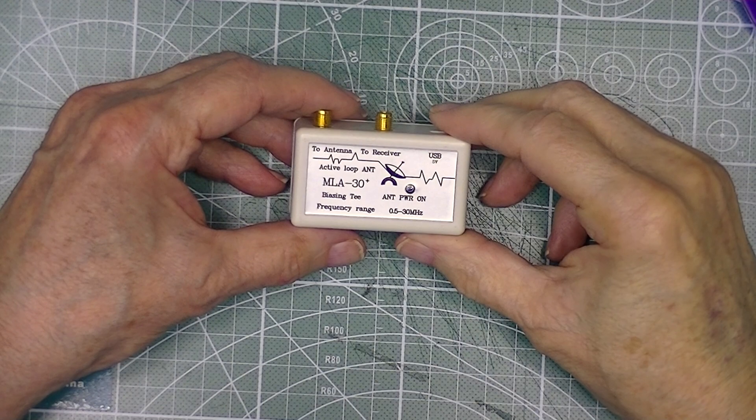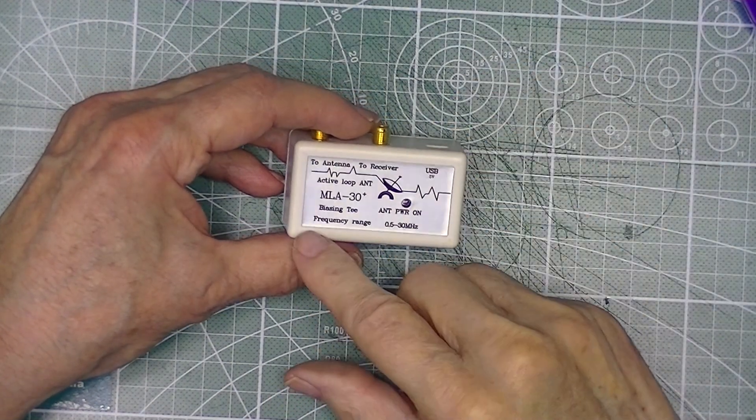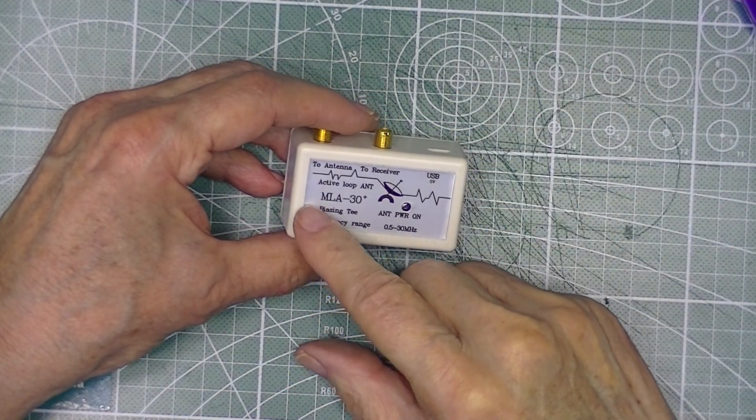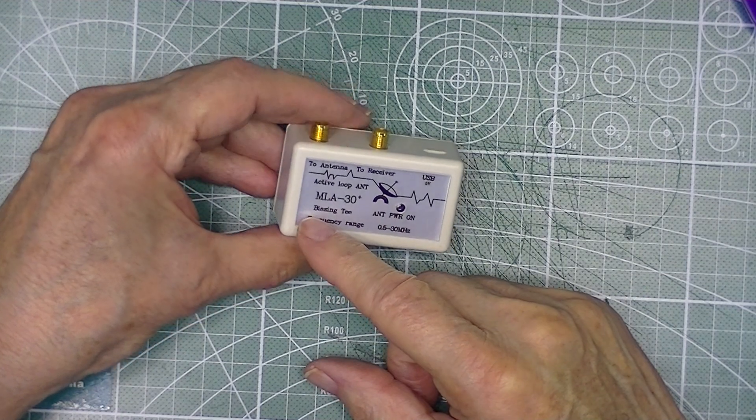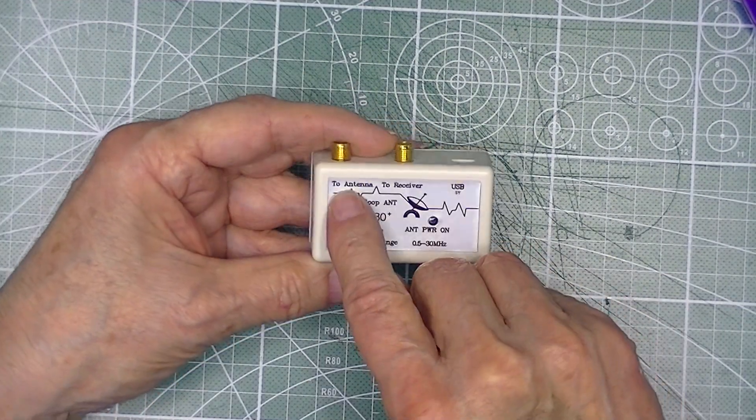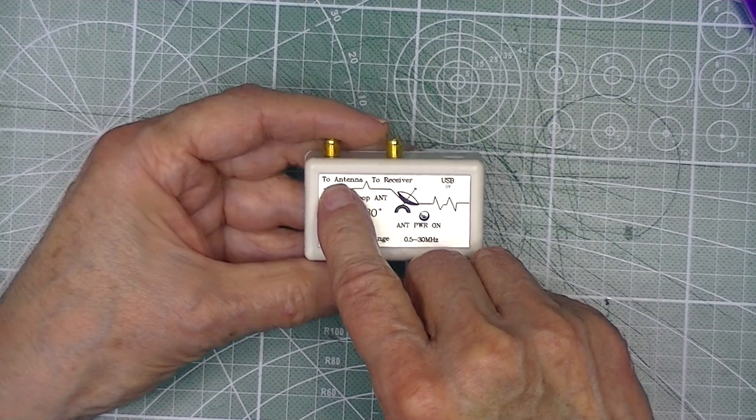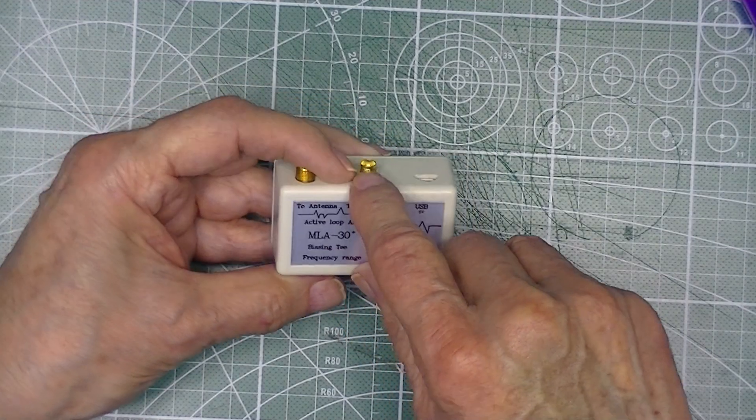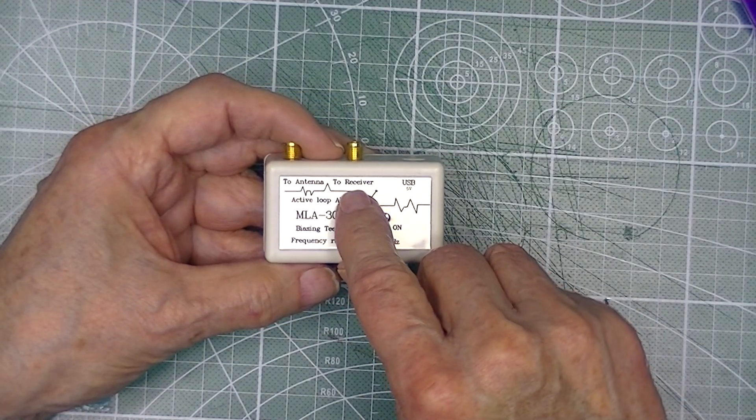The other end of the coax leading from the antenna, and it's about 15 meters long, 10 meters, connects to this SMA connector labeled antenna. This port goes to the receiver.